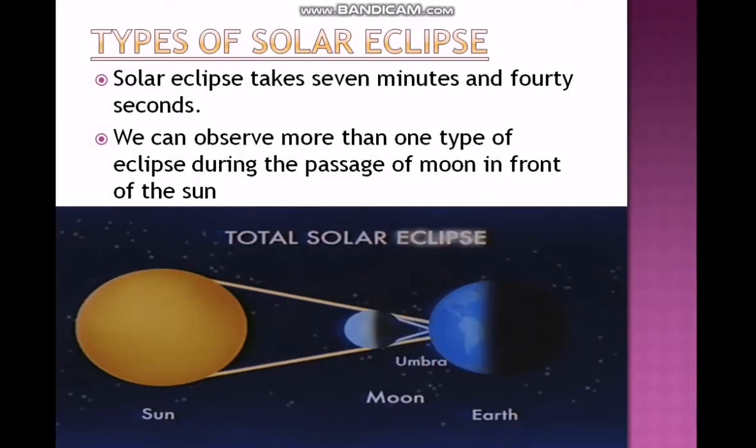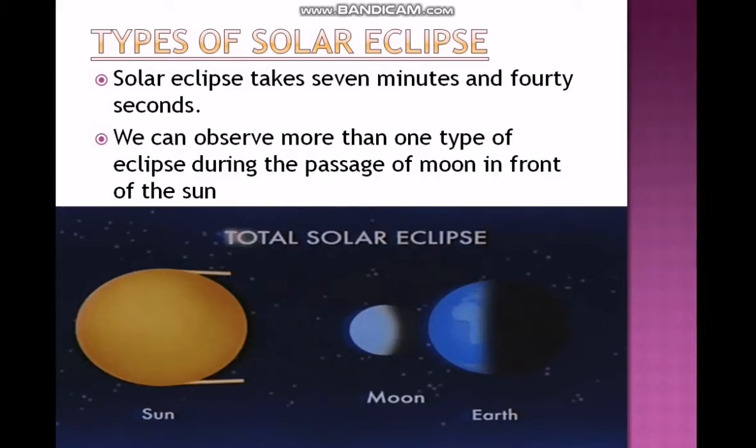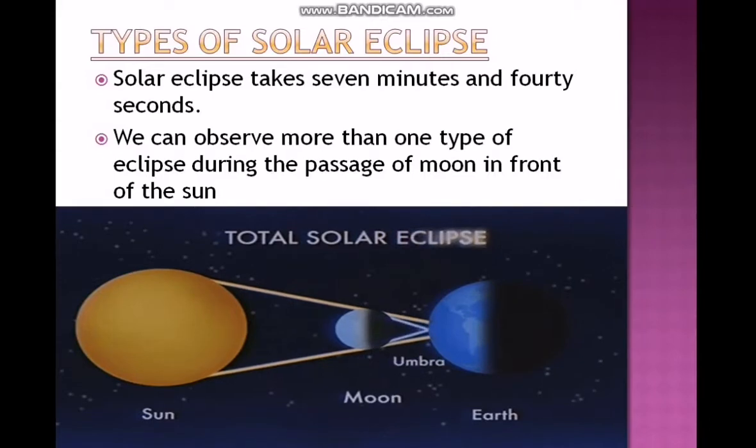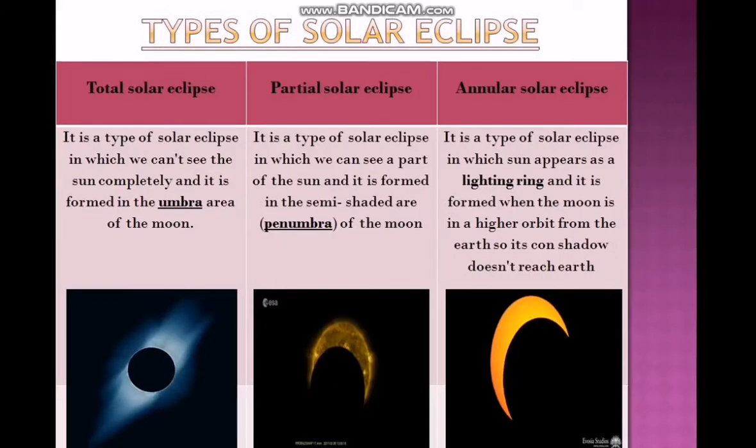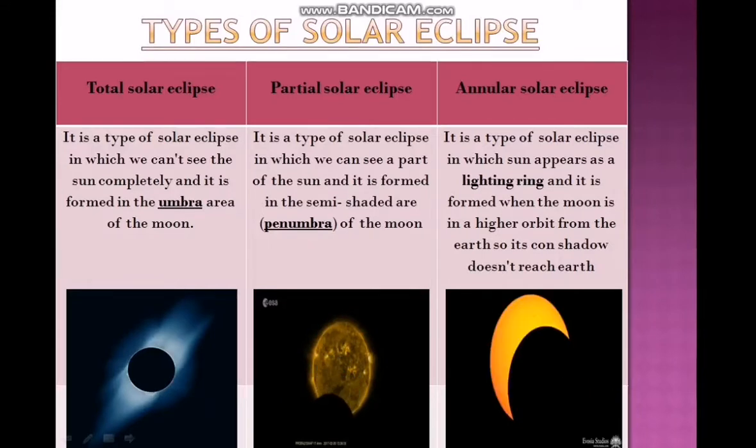Types of solar eclipse. Solar eclipse takes seven minutes and 40 seconds. We can observe more than one type of eclipse during the passage of the moon in front of the Sun. The first type: total solar eclipse. It is a type of solar eclipse where we can't see the Sun completely, and it is formed in the umbra area of the moon.